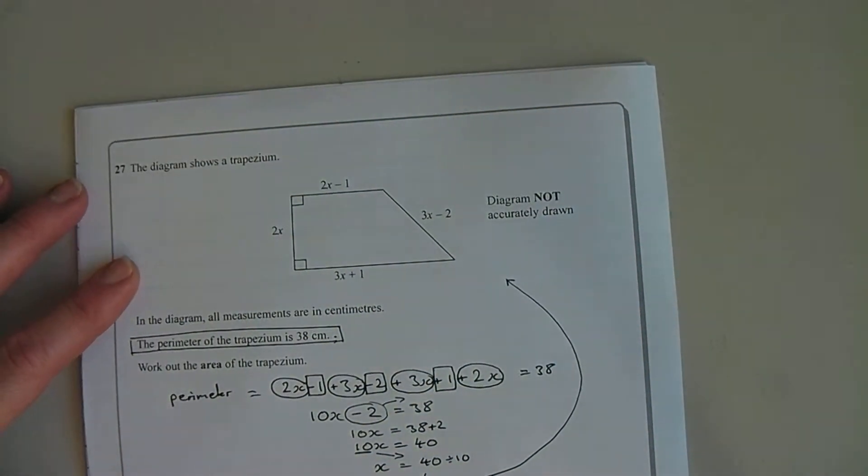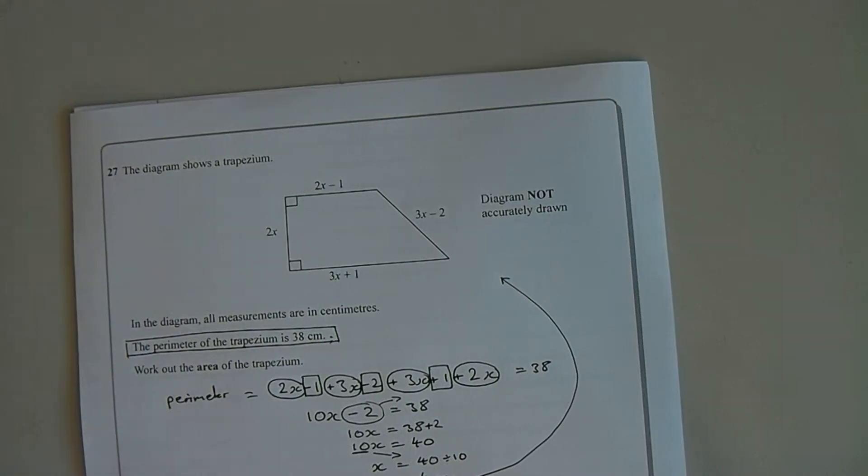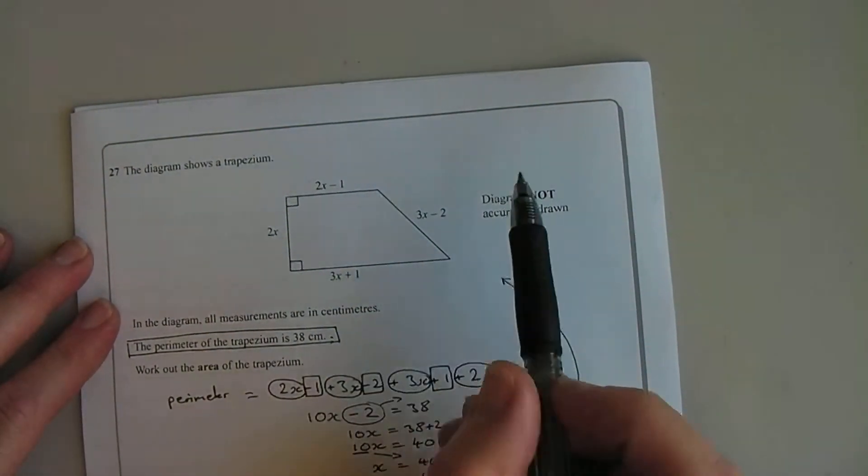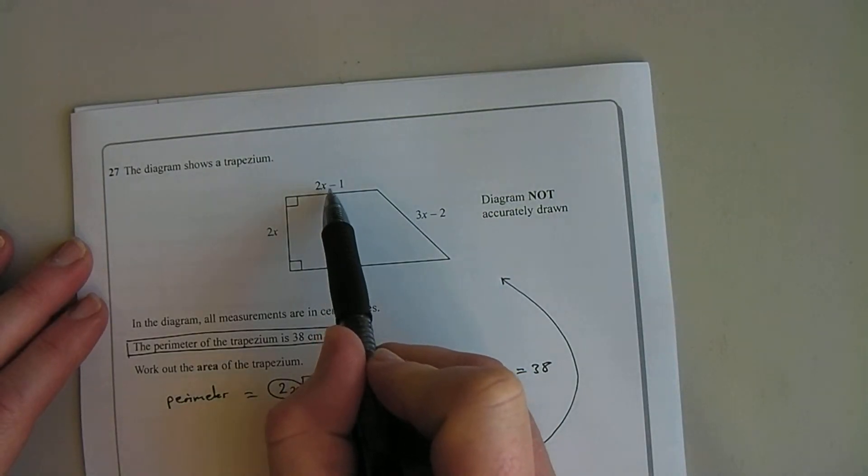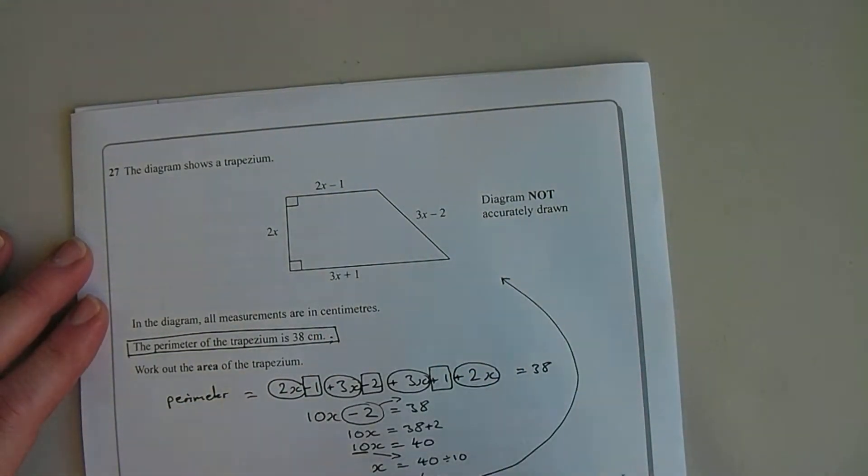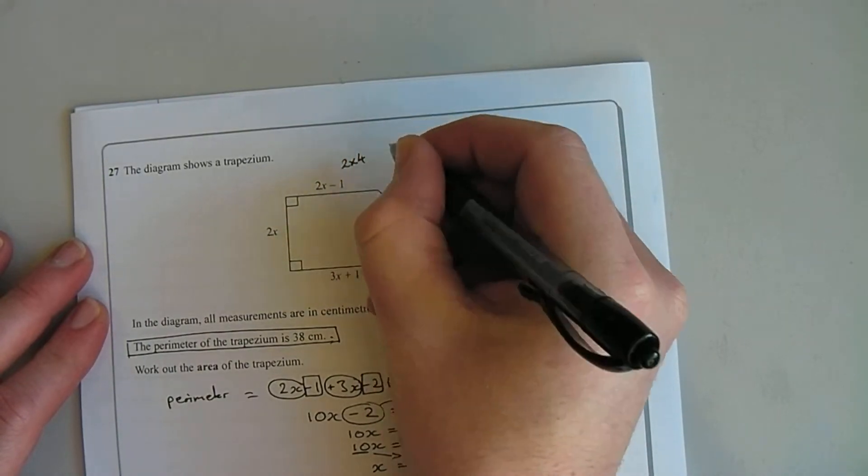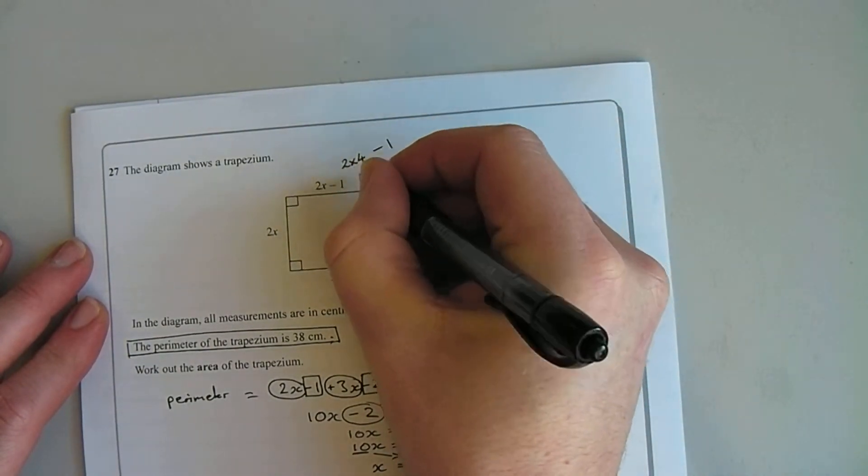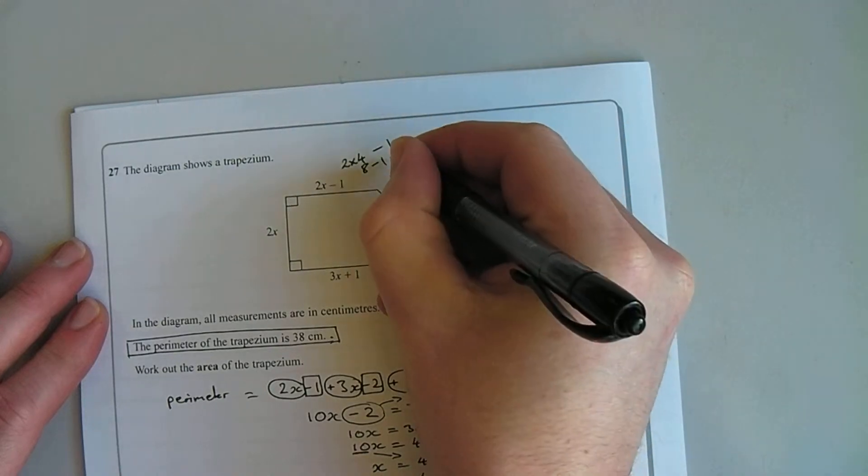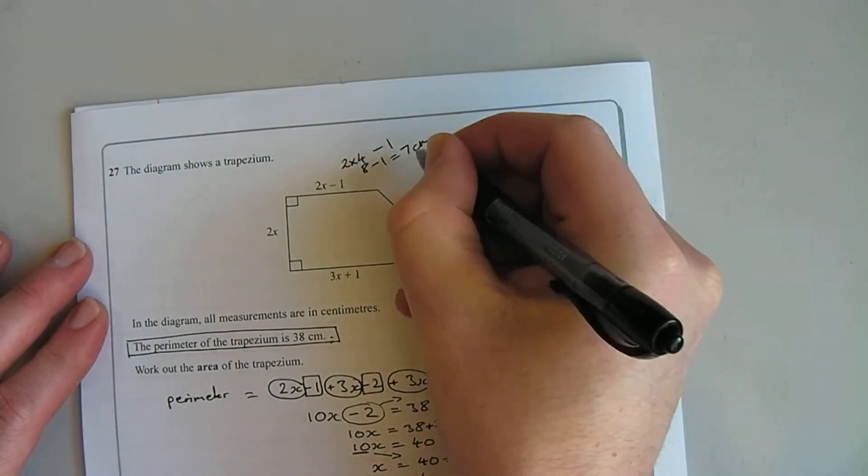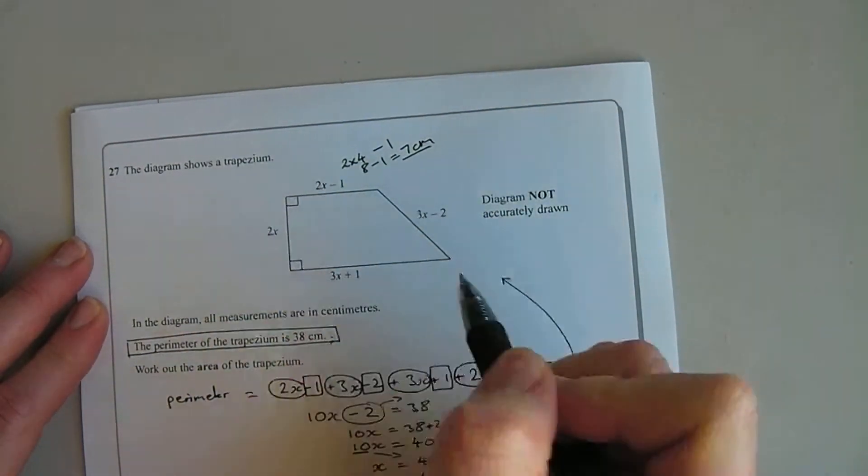So then I can see the length of each of the sides because I think that's going to be the easiest way to progress. So top line here, 2x-1, I'm going to substitute in 4 centimeters, so 2 times 4 and I'm going to take away 1. 2 fours are 8 minus 1, so that equals 7 centimeters. So I now know that the length of the top is 7 centimeters.